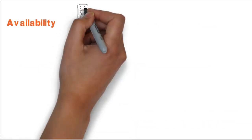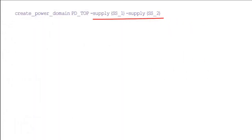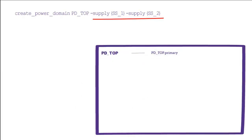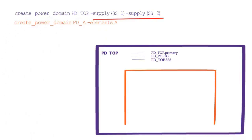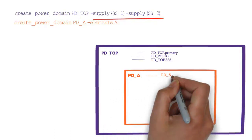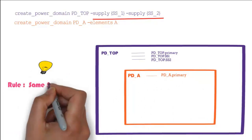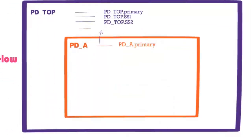First, let's talk about availability. We create power domain pdtop with additional handles ss1 and ss2 using the supply argument. pdtop now has pdtop.primary, pdtop.ss1, and .ss2 handles. Next, we create power domain pda on elements a. This will create pda.primary supply. As per the rule, the supplies are available in all power domains in the same scope and below, so pda.primary is available in pdtop.